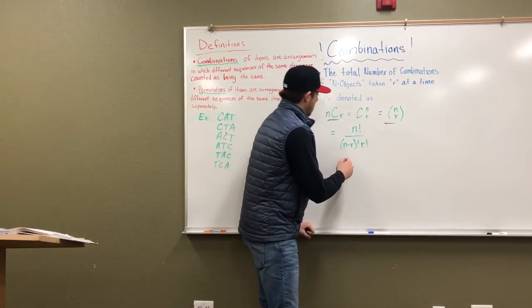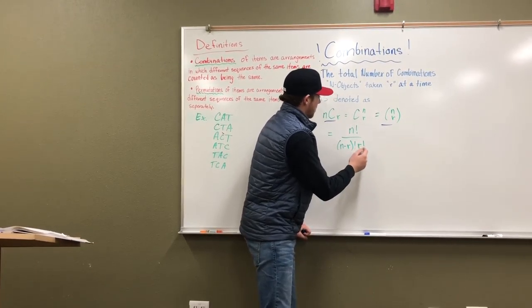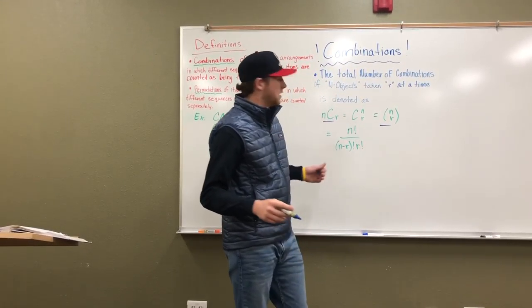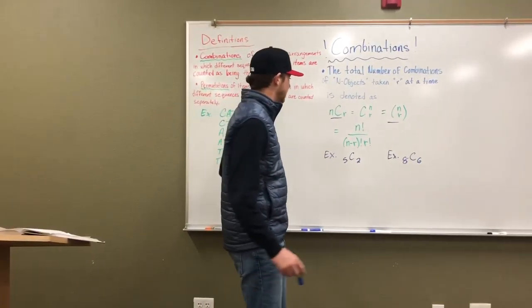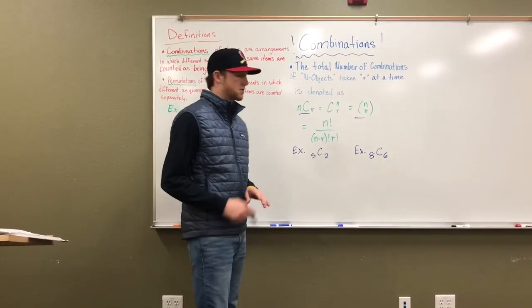N factorial over N minus R factorial times R factorial is how to solve your problem. Now that we understand the formula, let's take a look at some examples using the formula.